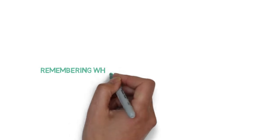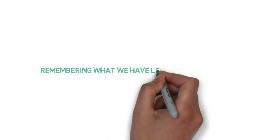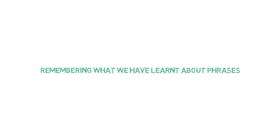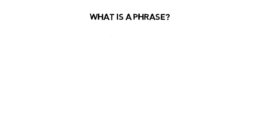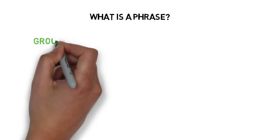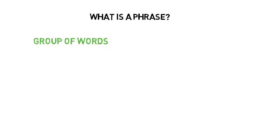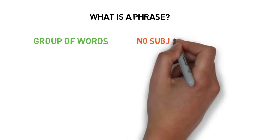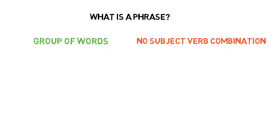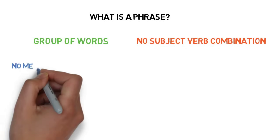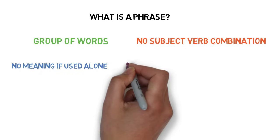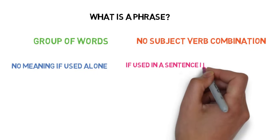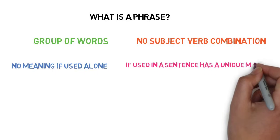Firstly, we will remember what we have already discussed about phrases in our previous video. What is a phrase? It is a group of words. It is having no subject-verb combination. It doesn't have meaning if used alone, but if used in a sentence, has a unique meaning.